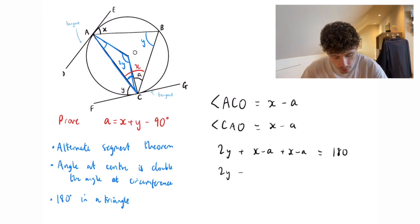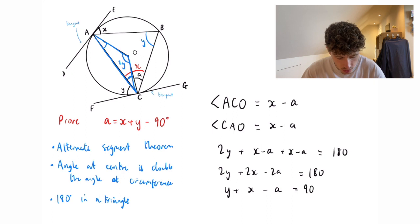we're going to have 2y plus 2x minus 2a equals 180. Divide everything by 2, y plus x minus a equals 90 and rearranging it we're going to get a equals x plus y minus 90 degrees.